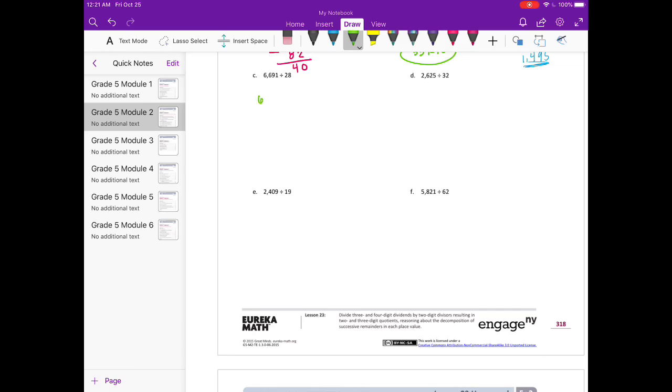6691 divided by 28. So 28 can't go into 6, but it could go into 66, I think, twice. Let's see what 28 times 2 is. Yeah, 56. So it can go in twice. If we subtract, we get 10, bring down the 9.